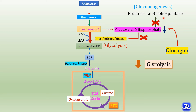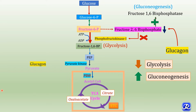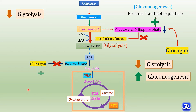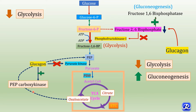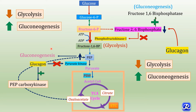Fructose 2,6-bisphosphate also inhibits fructose 1,6-bisphosphatase, an important enzyme in gluconeogenesis. In fasting and starvation, as fructose 2,6-bisphosphate levels fall, the inhibitory effect on fructose 1,6-bisphosphatase is removed, leading to increased gluconeogenesis. Additionally, glucagon inhibits pyruvate kinase by phosphorylating it, further decreasing glycolysis. Glucagon also induces synthesis of phosphoenolpyruvate carboxykinase (PEPCK), an important enzyme in gluconeogenesis, increasing phosphoenolpyruvate levels and thereby increasing gluconeogenesis.